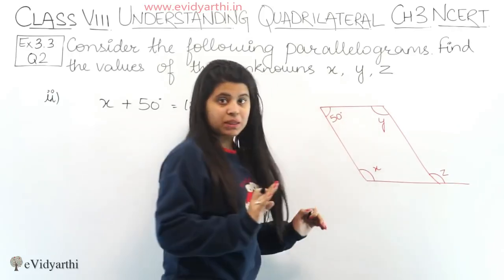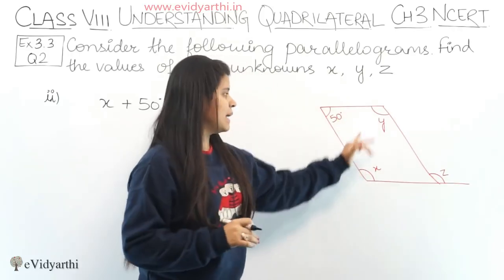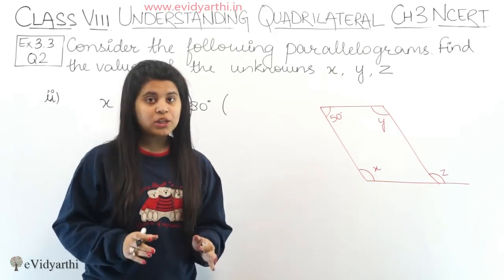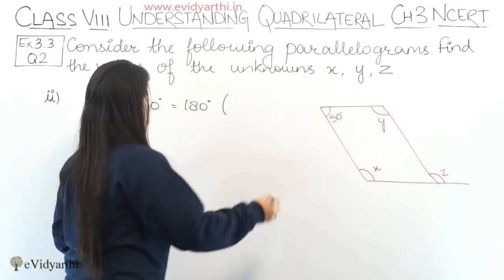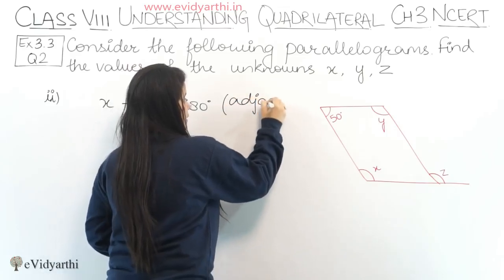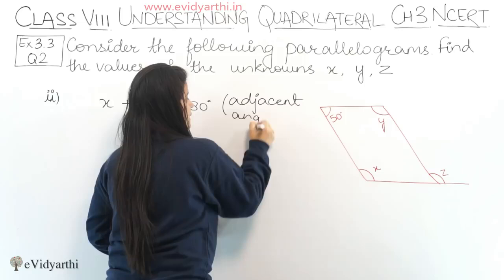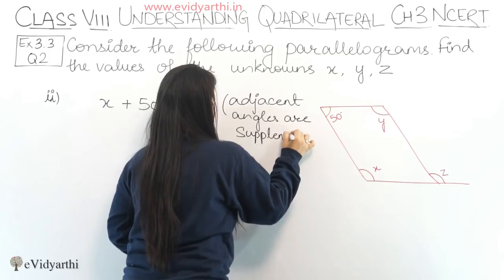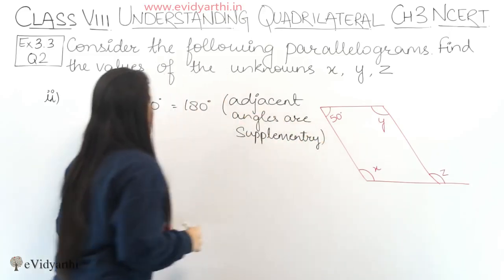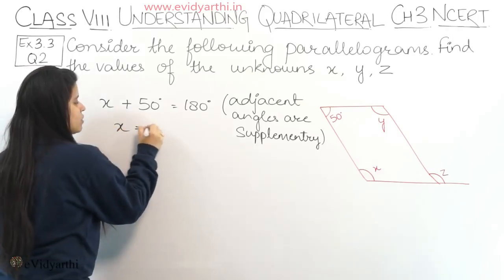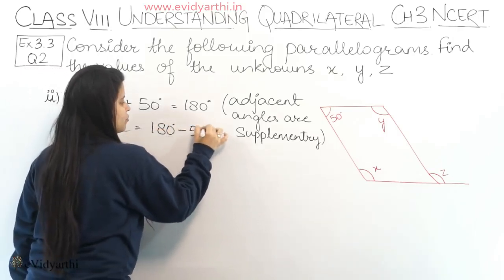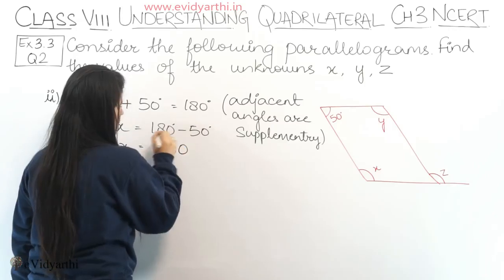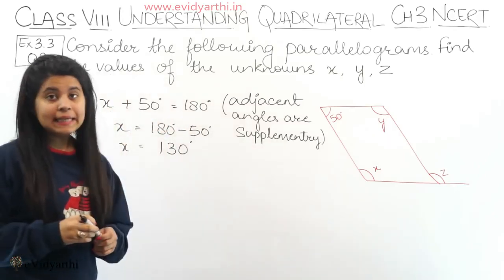Note that x or y — either can be taken since both are adjacent to the 50° angle. Always remember to mention the property used in brackets — this is very important. So x = 180 - 50 = 130°.